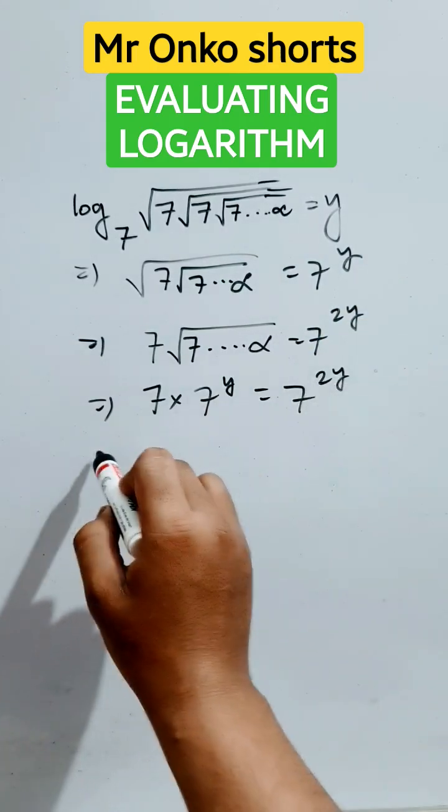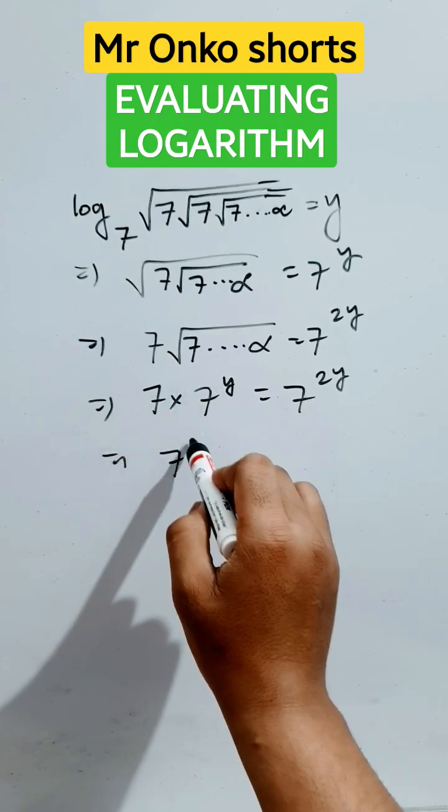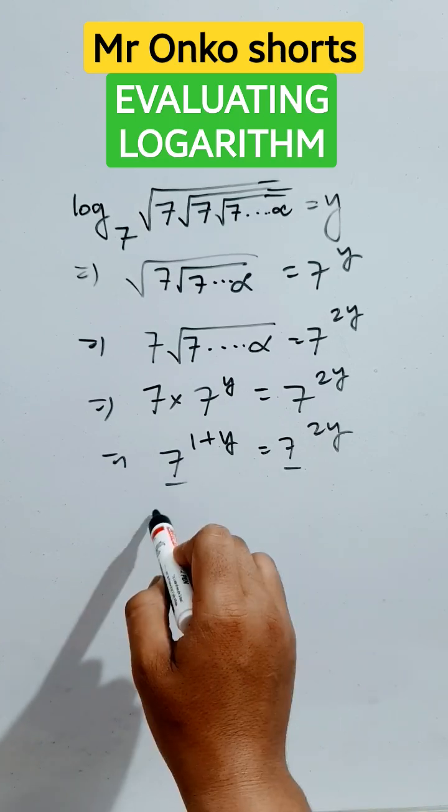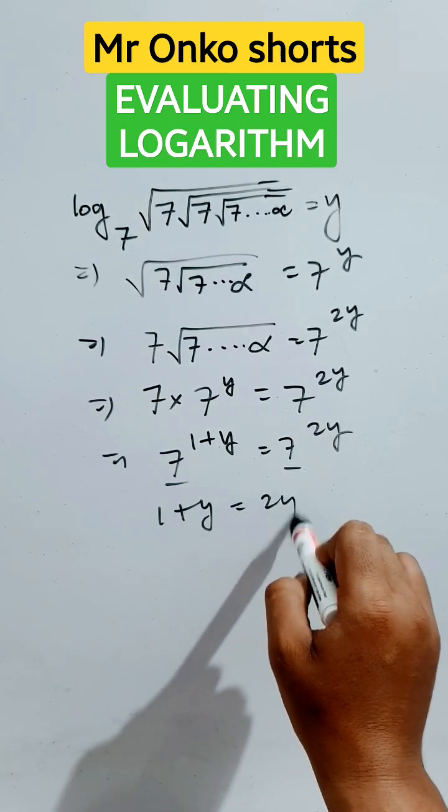According to the property of indices, this will be written in this form. Seven equals seven - it's an equation - so 1 plus y equals 2y, so y will equal 1.